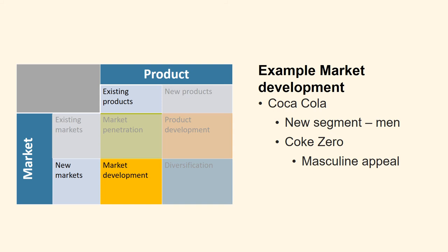The launch of Coke Zero in 2005 was a classic example of market development. Its concept is identical to Diet Coke — the great taste of Coca-Cola but with zero sugar and low calories. Diet Coke was launched more than 30 years ago and appeals to many females who drink it every day. Coke Zero is a product for men, with its shiny black can, and has successfully generated a more masculine appeal.